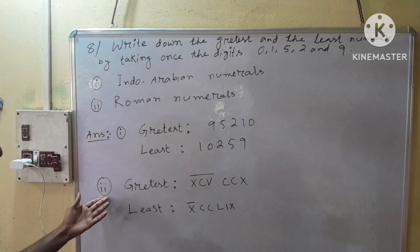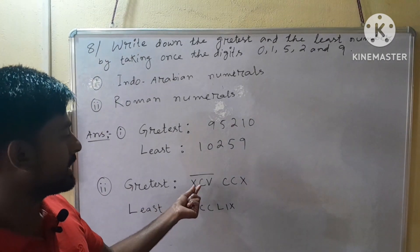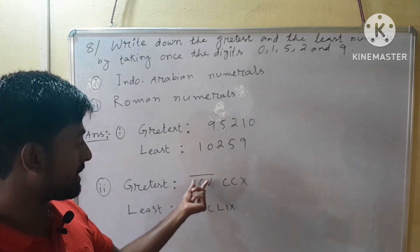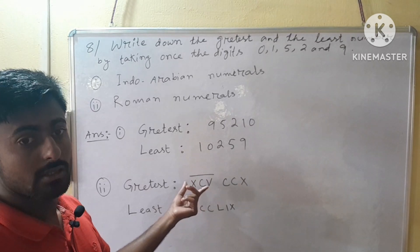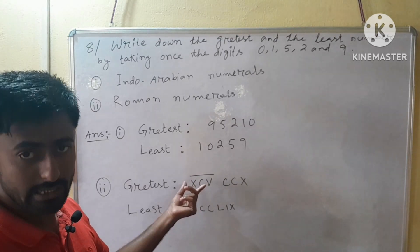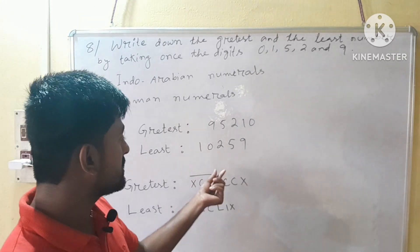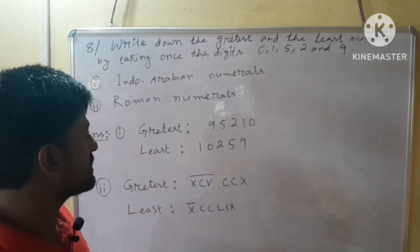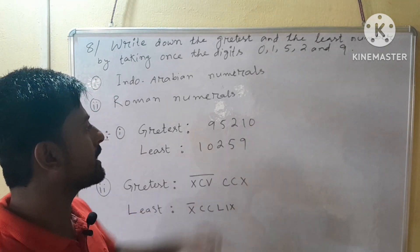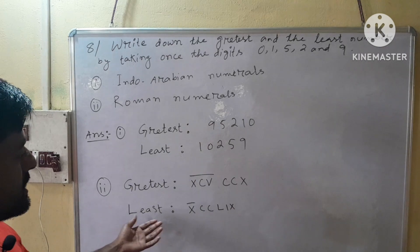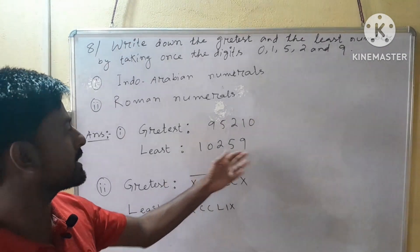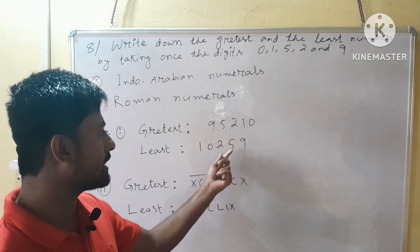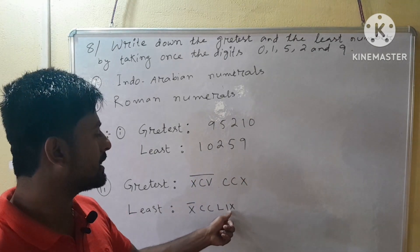In Roman numerals, the greatest number: XCV with a bar makes 95,000, and CCX means 200 plus 10, so together this is 95,210. For the least number 10,259: X with a bar means 10,000, double-C means 200, L means 50, and IX means 9 — giving 10,259.